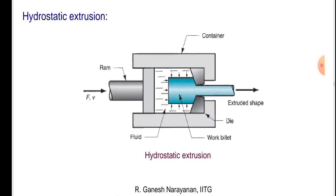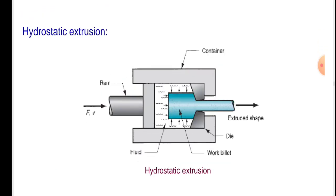Hydrostatic extrusion: The figure shows the hydrostatic extrusion in which the ram is forced by force F and velocity V. A container is given with a work billet inside, and fluid is present in the container. The extruded shape is produced.